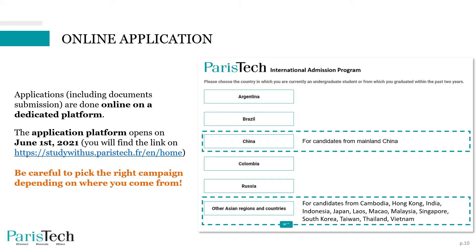You will find the link to the platform on studywithus.paristech.fr. Be careful to pick the right campaign depending on where you come from when filling out the application form. When you arrive on the dedicated platform, please pick the right campaign — depending on which country you come from, simply click on it and proceed. Please note that there is a dedicated campaign for candidates from mainland China and a separate campaign for other Asian regions and countries.